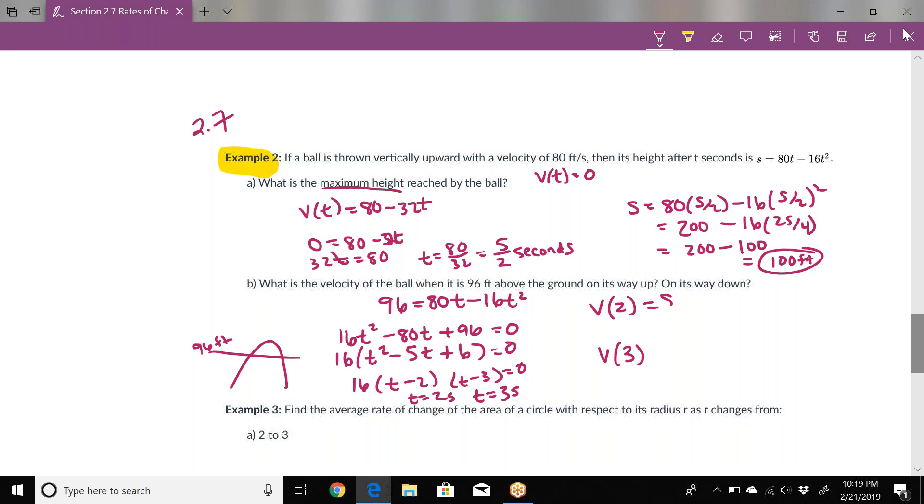Now, the 2 seconds should be on the way up with positive velocity, and 3 seconds on the way down with negative velocity.